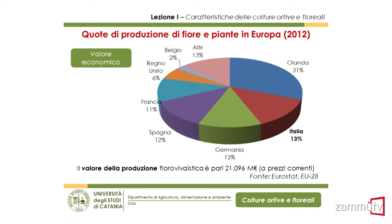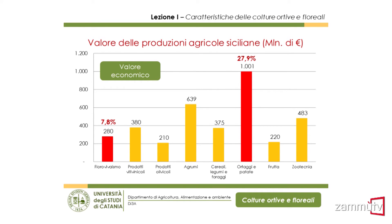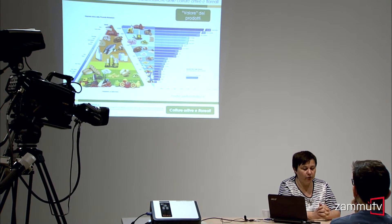Nonostante questi numeri piccoli di superficie, il valore della produzione florovivaistica è molto importante a livello europeo. Per i 28 paesi dell'Europa nel 2012 si parlava di oltre 21 miliardi di euro di produzione, e l'Italia si colloca al secondo posto dopo l'Olanda, che da sola ha quasi un terzo del valore economico europeo. In Sicilia, il florovivaismo e gli ortaggi e le patate hanno un grande rilievo, occupando circa un terzo dell'intero comparto agricolo.